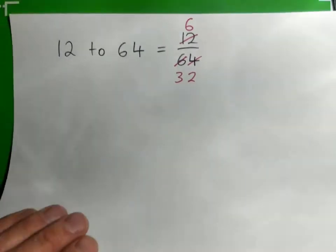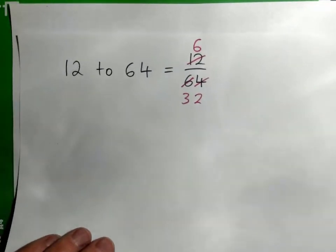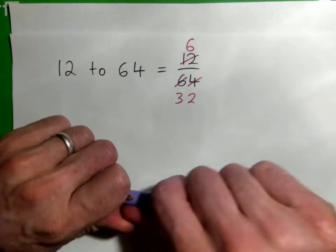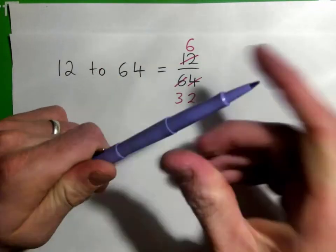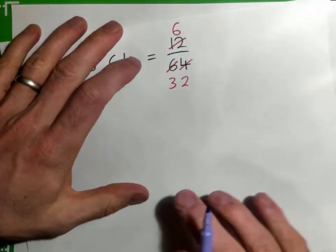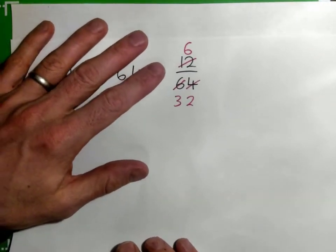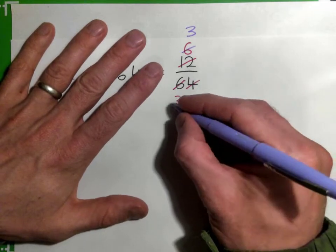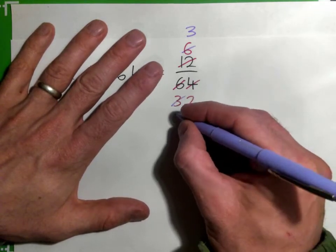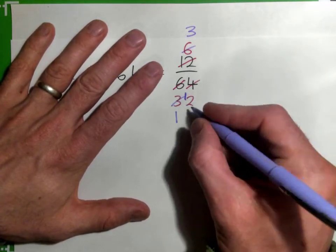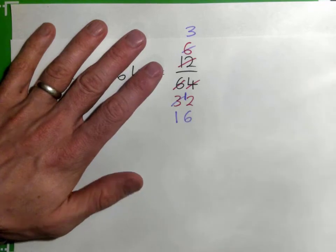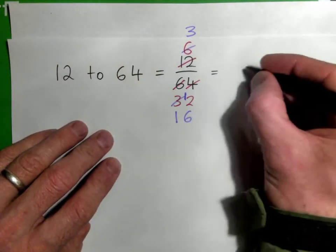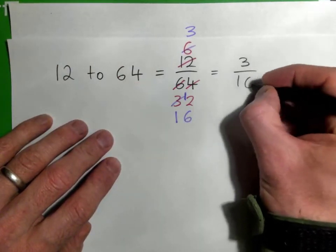So 2 into 6 — 2 into 6, once remainder 1. And 2 into 12 is 6 times. So I've got 3 over 16, so just write that 3 over 16.